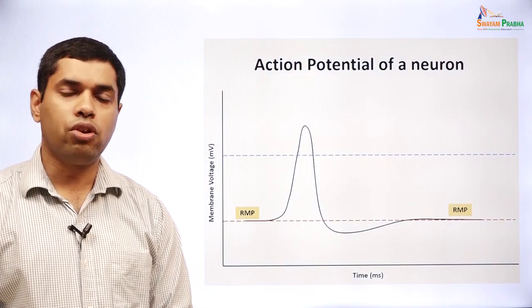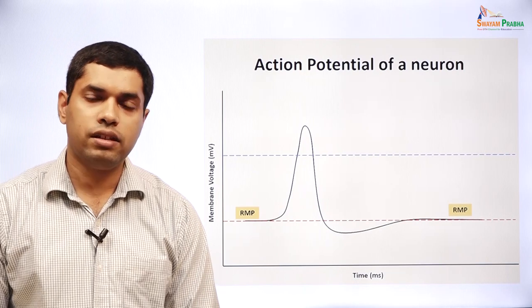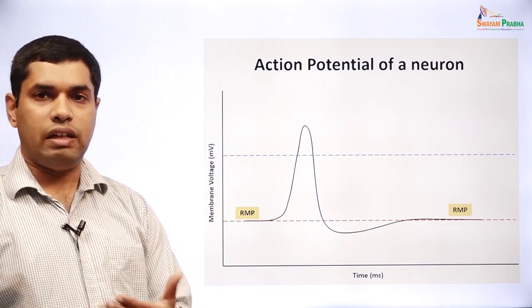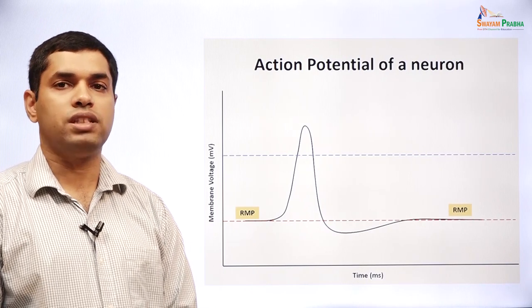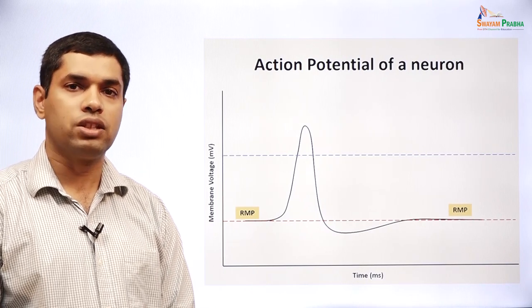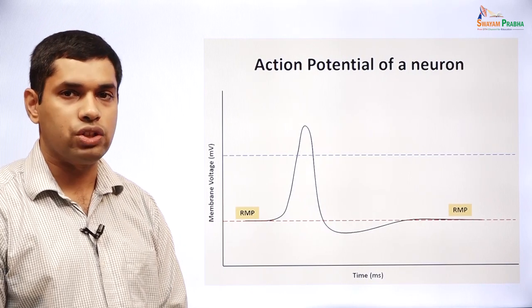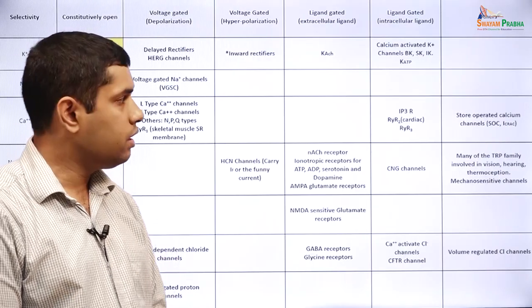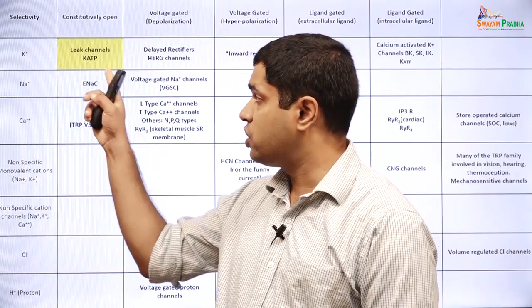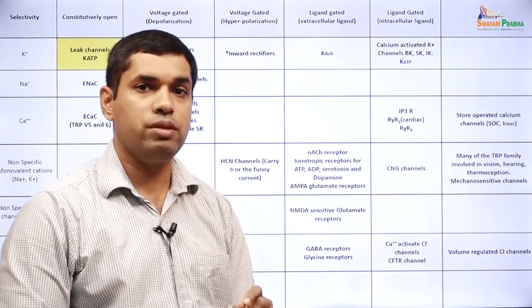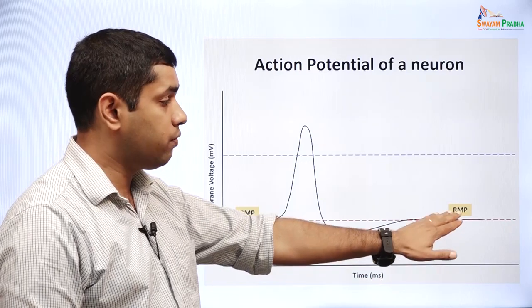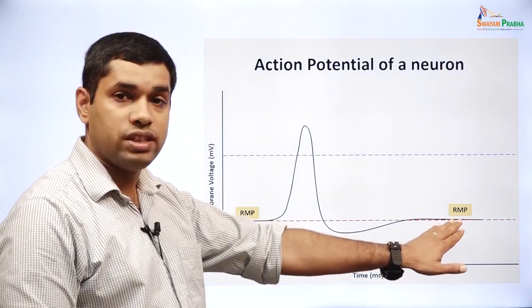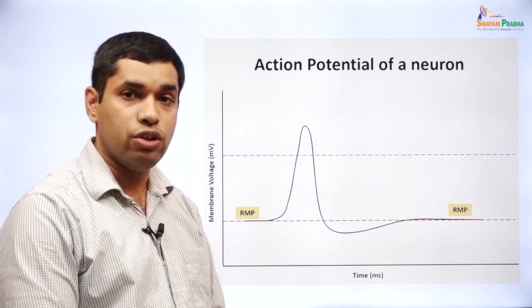Let us now look at the neuronal action potential and the ion channels that contribute to it. We have just seen that the leak potassium channel contributes to the potassium permeability of the membrane, and this potassium permeability is important for maintaining the cell's resting membrane potential, especially in a neuron.